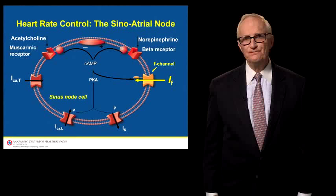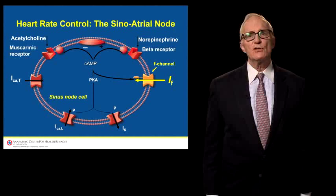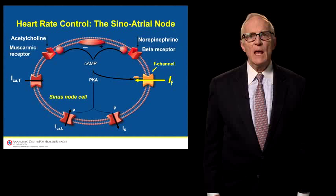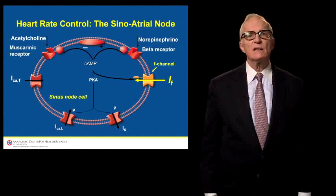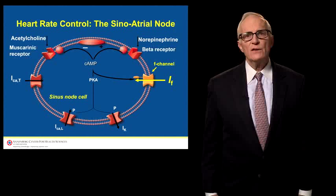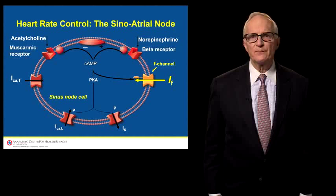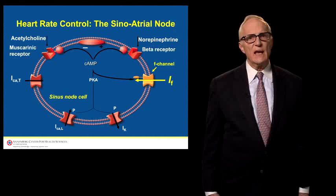Any discussion of Ivabradine, which acts solely by depressing heart rate, must begin with a discussion of how heart rate is controlled. Sinoatrial nodal cells have a variety of channels in their cell membranes. Two of those kinds of channels — calcium and potassium channels — leak, and the extent to which they leak results in the generation of a current as ions move across the channels, either in or out. The current that develops results in the spontaneous diastolic depolarization of the heart — that is the basis of the heart rate. The heart rate is fixed by the characteristics of the calcium and potassium channels in the sinoatrial nodal cells.